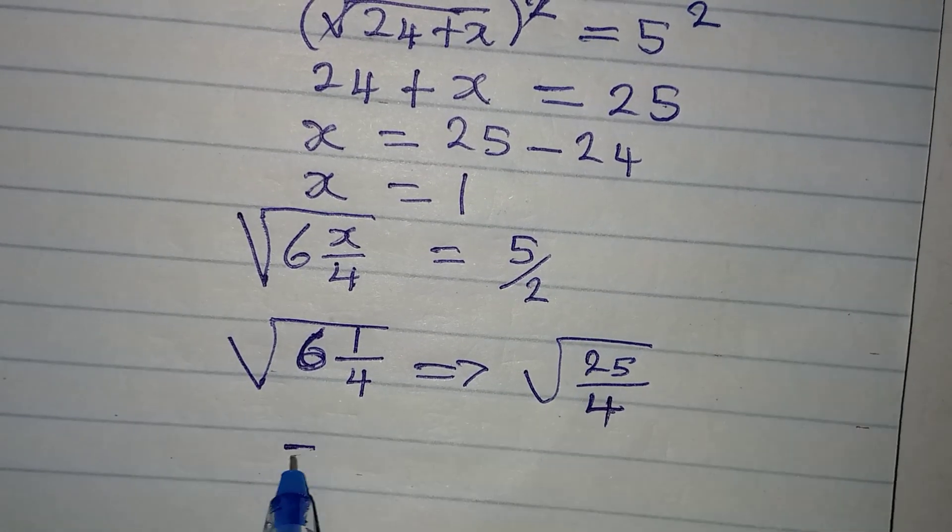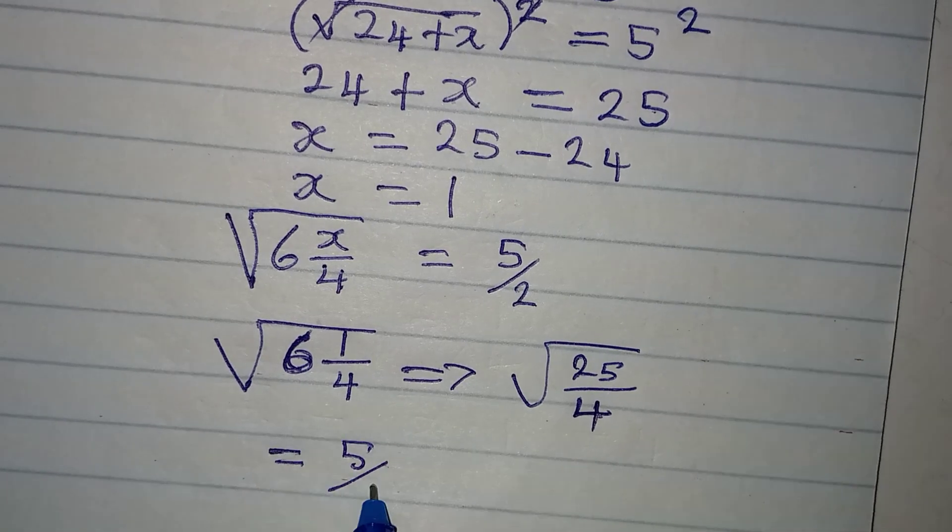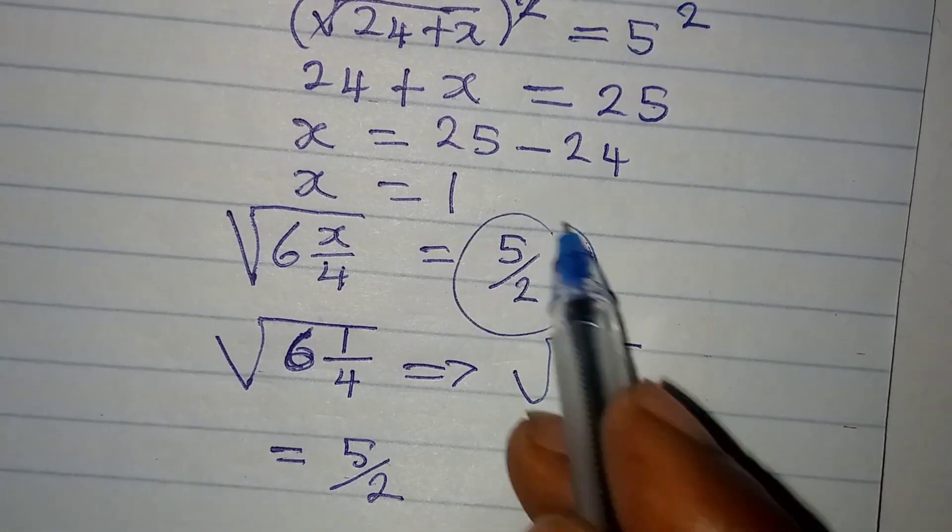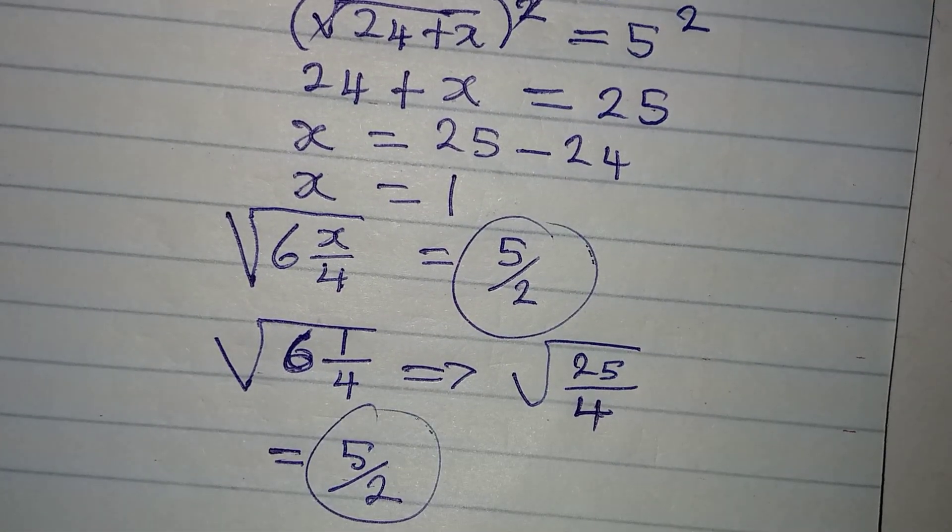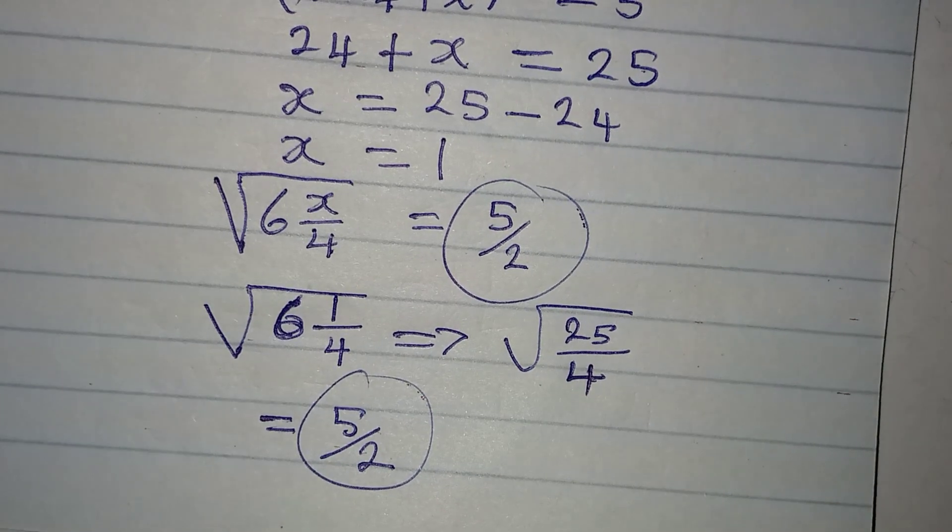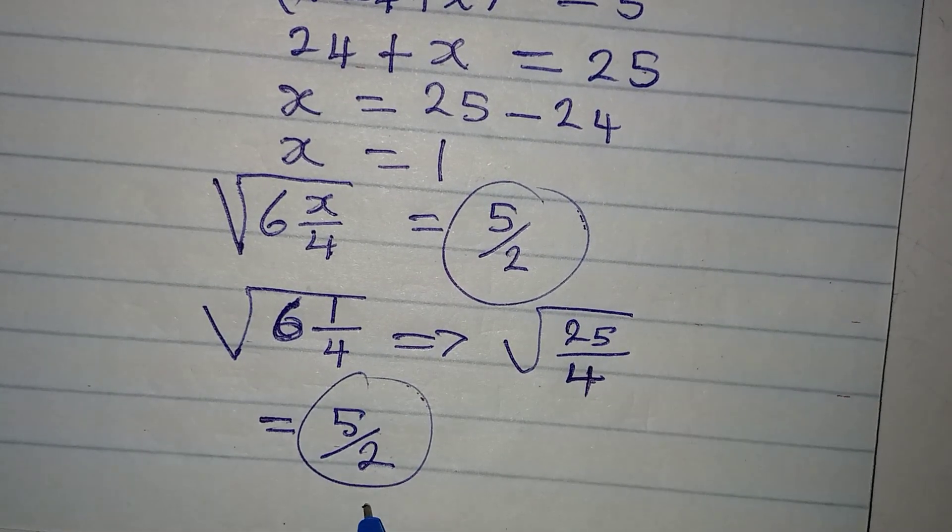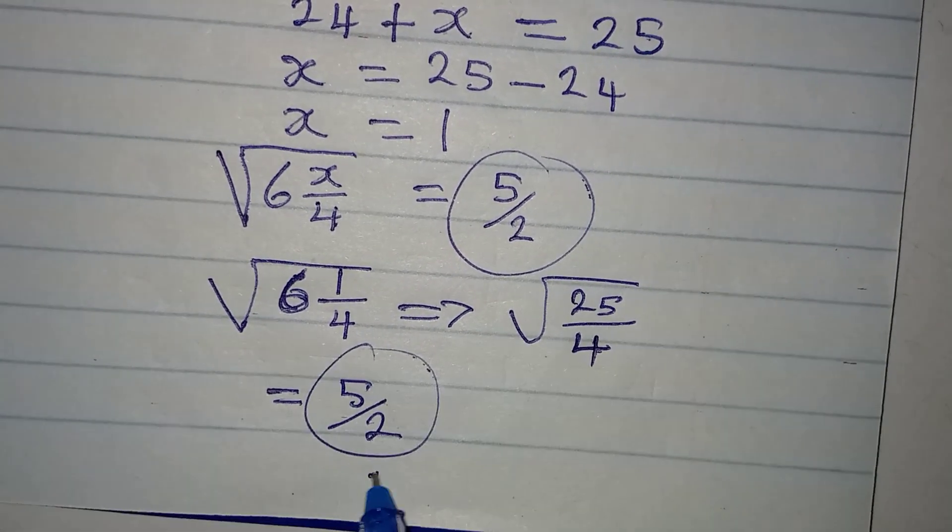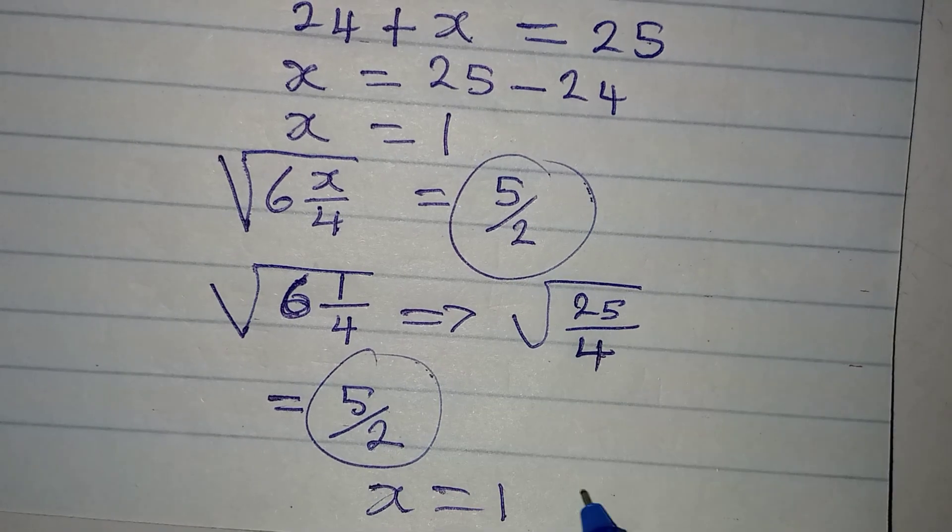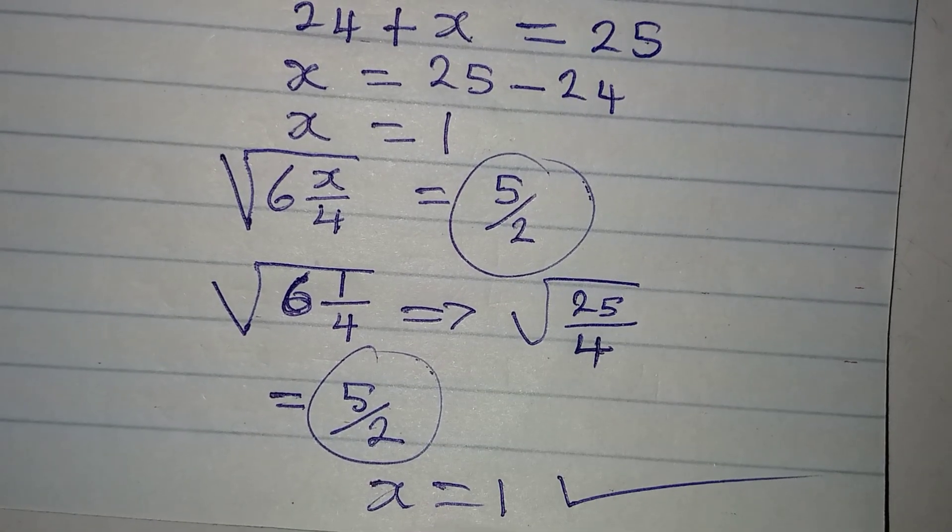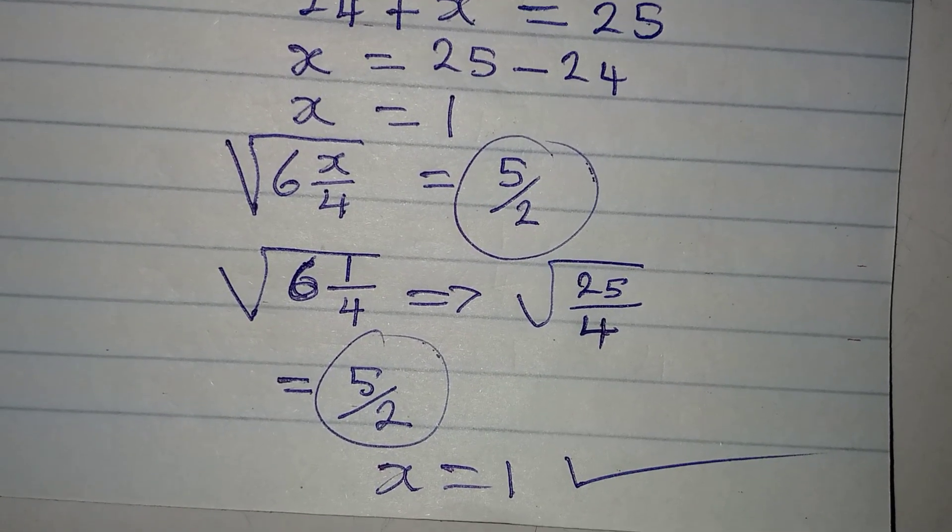The square root of this will give us 5 over 2, and that is what we got on the right-hand side. So this is a confirmation that x equals 1 actually satisfies the equation. Thank you for watching.